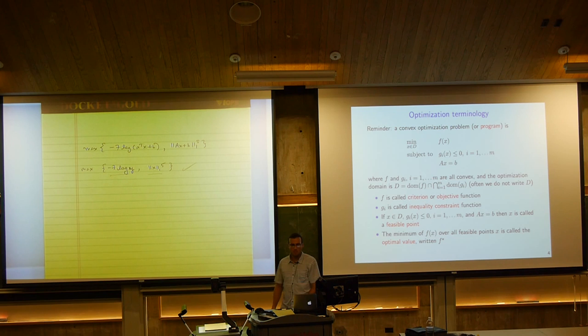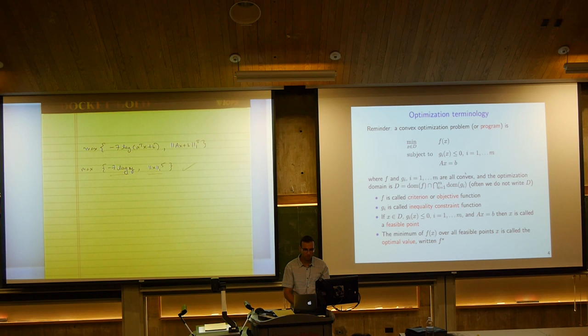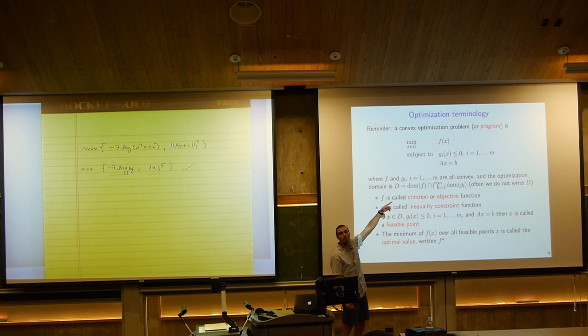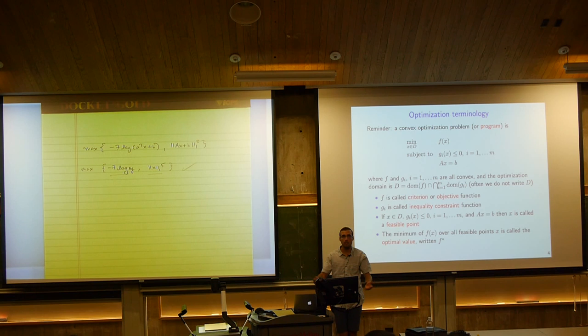A convex problem is one in which the criterion and constraints are all convex — inequality constraints are convex and equalities are linear. We sometimes call it a program: a convex program, quadratic program, or semi-definite program. We often don't write the domain explicitly — it's implicit. For example, if f(x) = log x, it's implicit that x can't be negative or zero.